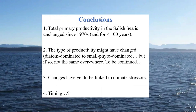In conclusion, what we know so far: total primary productivity is unchanged since the 1970s and over the last hundred years — that's a confident finding. The type of productivity might have changed from diatom-dominated to small phytoplankton-dominated, but if so, not everywhere. The changes are not the same in Strait of Georgia as in Puget Sound, and they don't appear to be the same in Hood Canal as in the main basin, based on sediments at least.